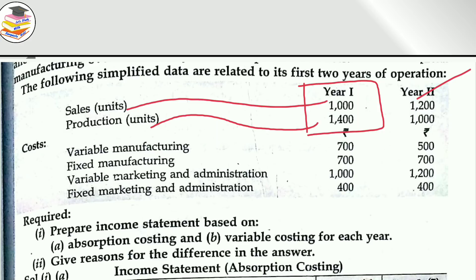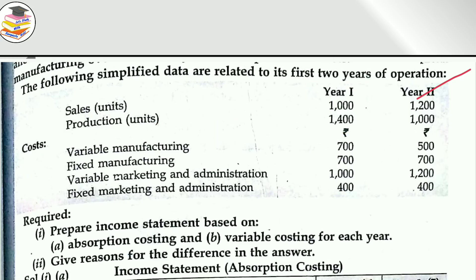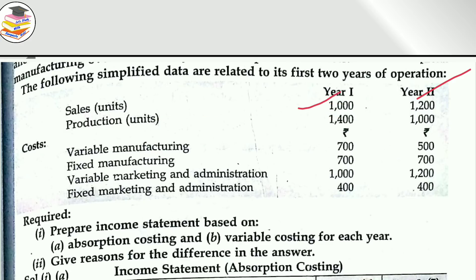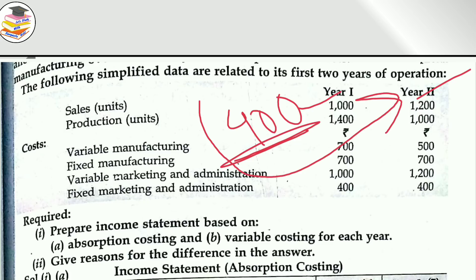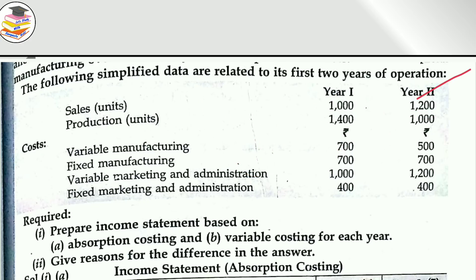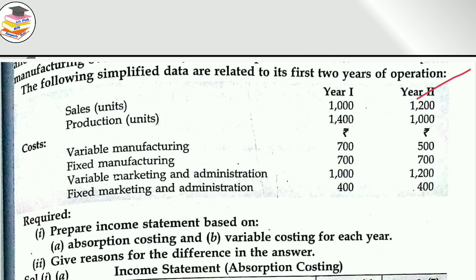Here the question involves opening stock, not just closing stock. Because the sales and production differ by 400 units, your closing stock will increase. This closing stock becomes the opening stock in the next year. This is the key difference from the previous question — in the previous question, production equalled sales, so there was no opening or closing stock situation.